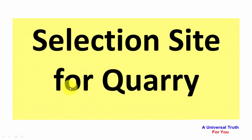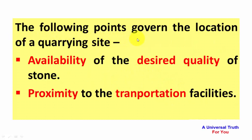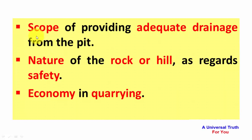Selection site for quarry. The following points govern the location of a quarrying site: availability of the desired quality of stone, proximity to the transportation facilities, scope of providing adequate drainage from the pit, nature of the rock or hill as regards safety, and economy in quarrying.